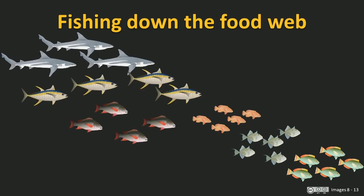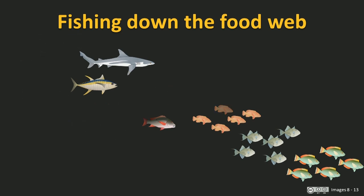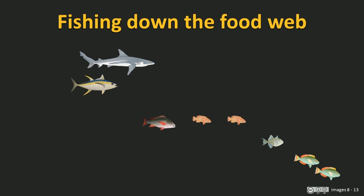One consequence of this is called 'fishing down the food web.' We start by fishing the most desirable predatory fish at the top of the food chain — sharks, tunas, big jacks, snappers, groupers. As they become rarer, partly because they grow slowly and reproduce at a fairly late age, we shift down towards smaller-bodied fish lower down the food chain. This has been termed 'fishing down the food chain' by Daniel Pauli.